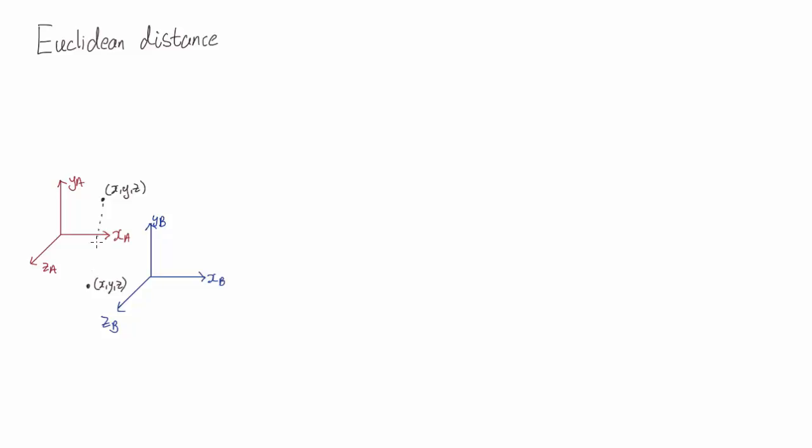Now we can calculate what we call the Euclidean distance between these points. We call this d, and just using the Pythagoras theorem, d squared is equal to distance in x squared plus distance in y squared plus distance in z squared.